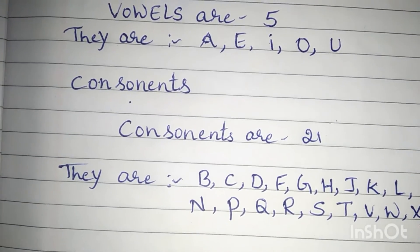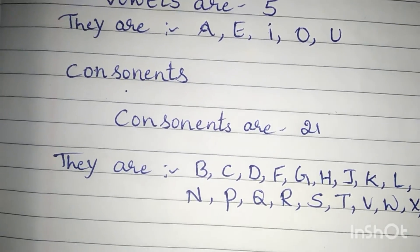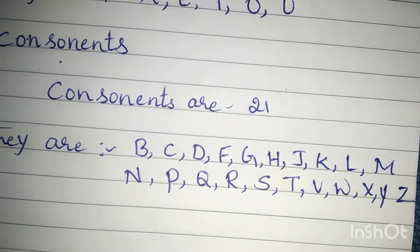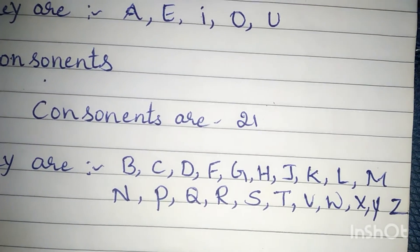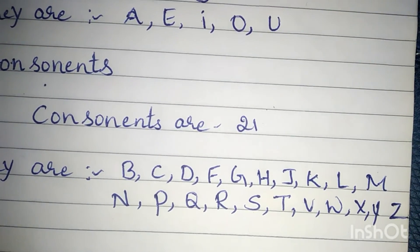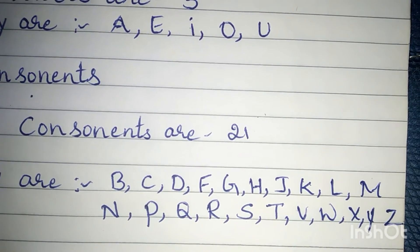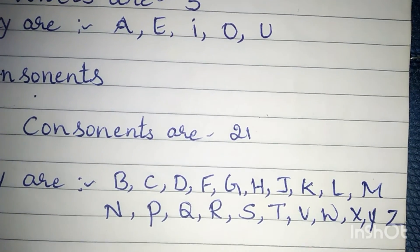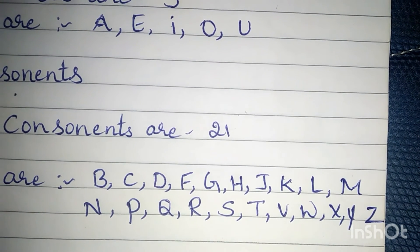Consonants. Consonants are 21. They are: b, c, d, f, g, h, j, k, l, m, n, p, q, r, s, t, v, w, x, y, z.